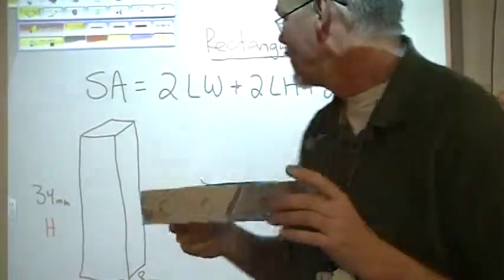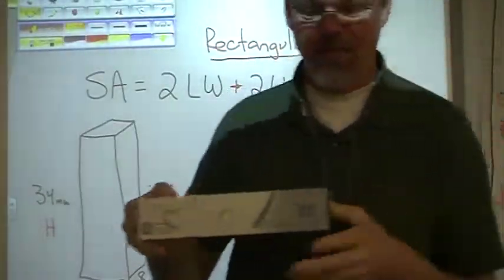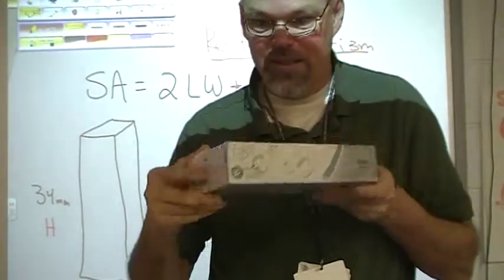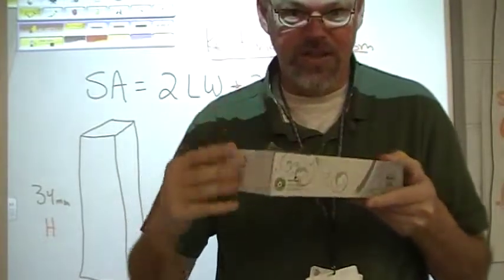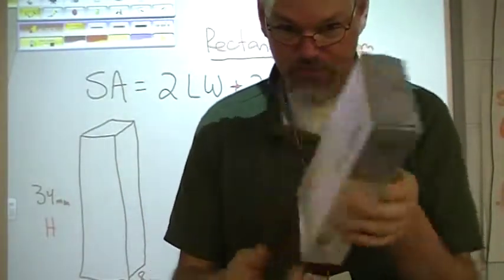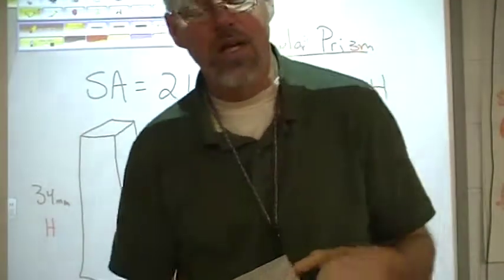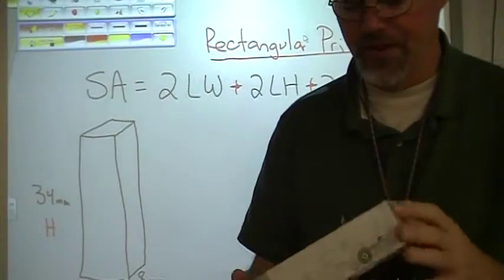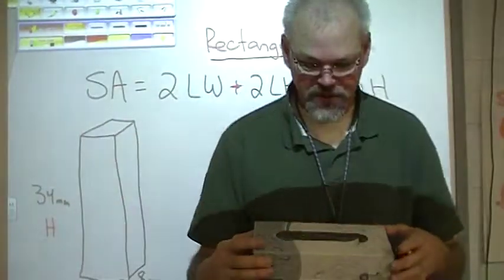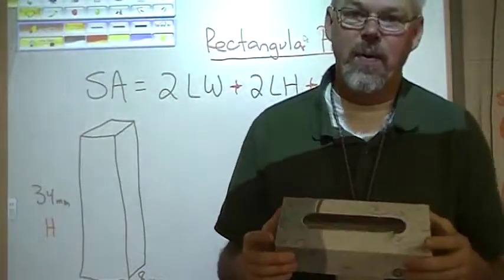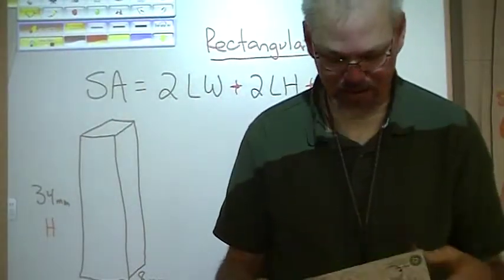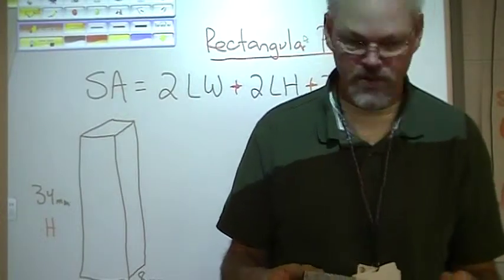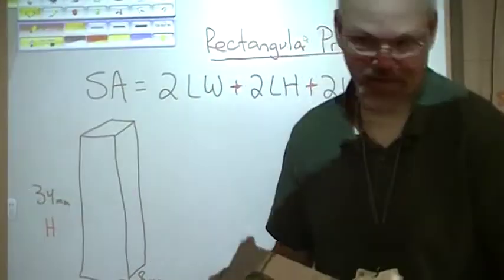But now we're getting into shapes that aren't flat. Take this tissue box, this is a rectangular prism. If you look at it, one side of it here is a rectangle, but it's deep and it's tall and it's got, you know, it's present. It's not just flat, it's able to hold things. So what if we wanted to paint this box?